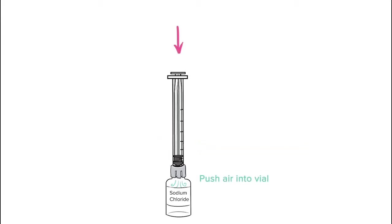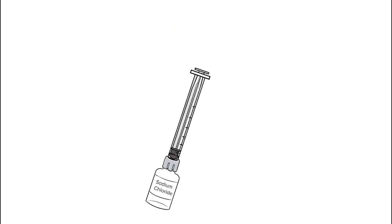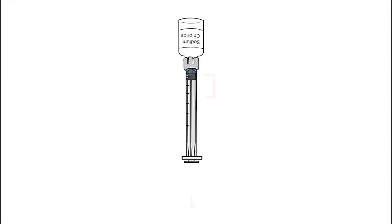Slowly push down the syringe plunger to push air from the syringe into the vial. Then withdraw the correct amount of sodium chloride from the vial.